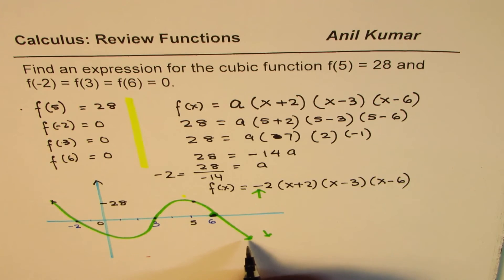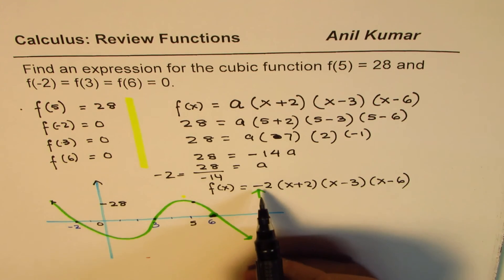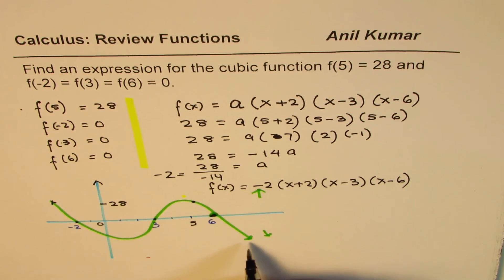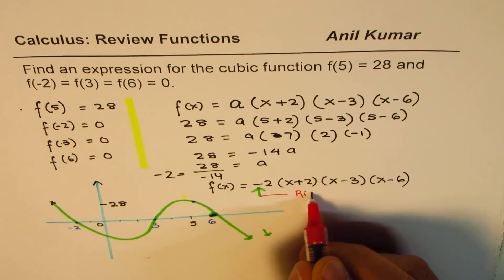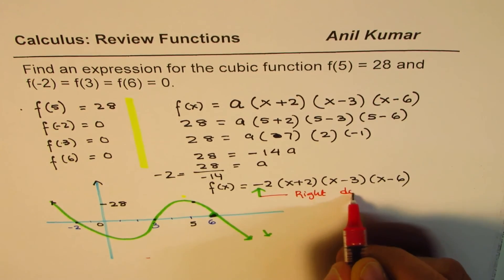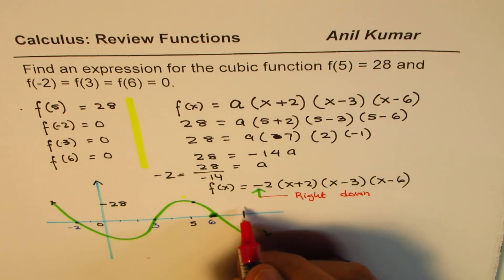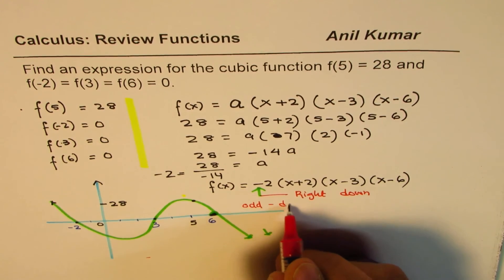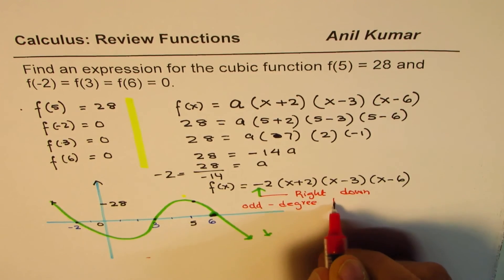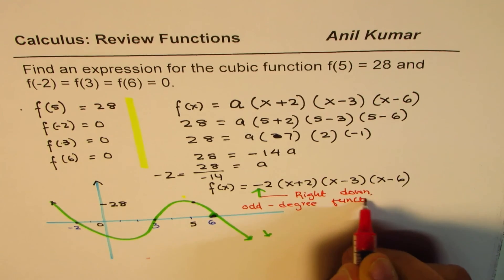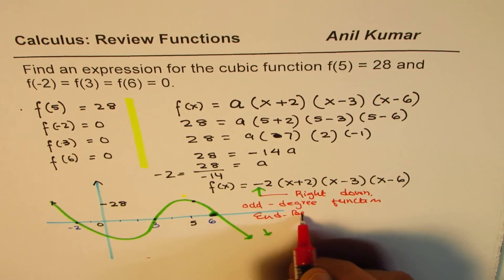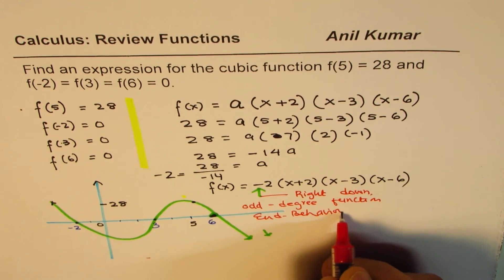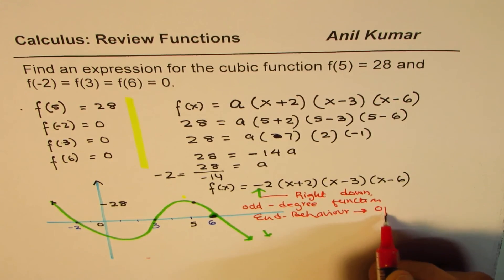And let me review a few concepts of polynomials here. If the leading coefficient is negative, right side is down. Do you see that? Leading coefficient negative, right down. Second, we have odd degree function, and that means opposite ends. End behavior is opposite ends.